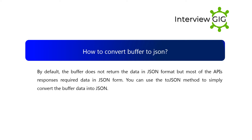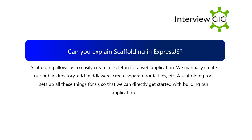How to convert buffer to JSON? By default, the buffer does not return data in JSON format, but most API responses require data in JSON form. You can use the toJSON() method to simply convert the buffer data into JSON. Can you explain scaffolding in Express.js? Scaffolding allows us to easily create a skeleton for a web application — we manually create public directories, add middleware, and create separate route files. A scaffolding tool sets up all these things for us so we can directly get started with building our application.